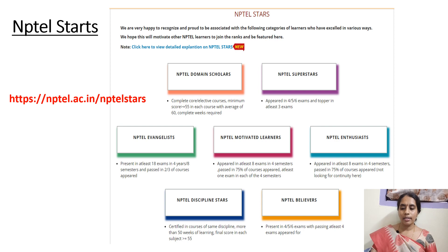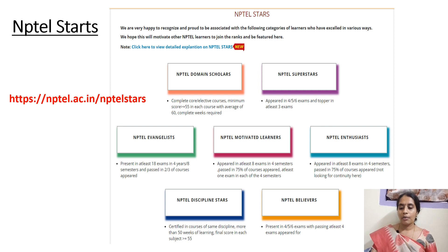Coming to the next category, NPTEL Motivated Learners. The student should write at least 8 exams in 4 semesters, that is 2 exams per semester. The criteria is that they should pass at least 1 exam in each of the 4 semesters, and that course should get a 75% score. Importantly, there should be no gap between semesters — the student should write exams continuously every semester to get the NPTEL Motivated Learner certificate.